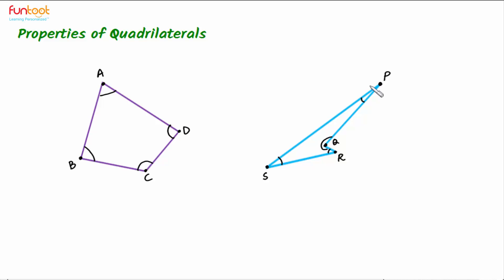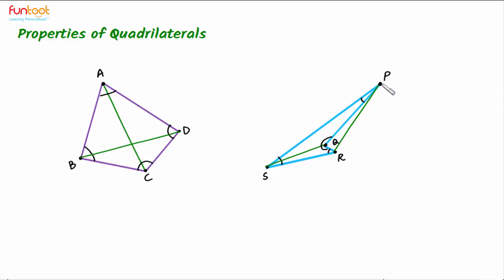We can also identify the diagonals of a quadrilateral. In quadrilateral ABCD, both diagonals lie inside the quadrilateral. In quadrilateral PQRS, the diagonals are SQ and PR, and PR lies outside the quadrilateral.